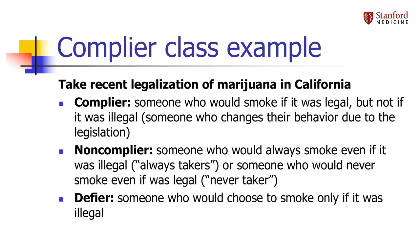A really good example for illustrating the idea of complier class is the recent legalization of marijuana in California. In this case, we can actually observe the complier classes. Imagine that we want to use the legalization of marijuana as an instrumental variable for studying the effects of marijuana on health. Compliers are people whose smoking habits are actually influenced by the legislation — these are the people who didn't smoke when the drug was illegal, but will smoke now that it's legal.